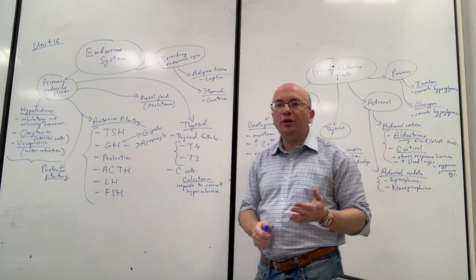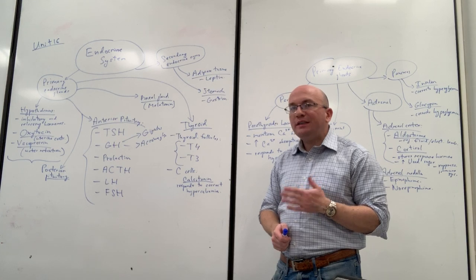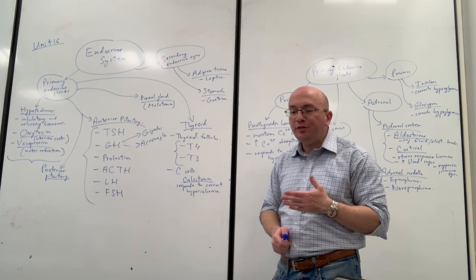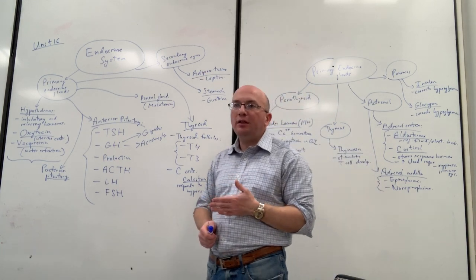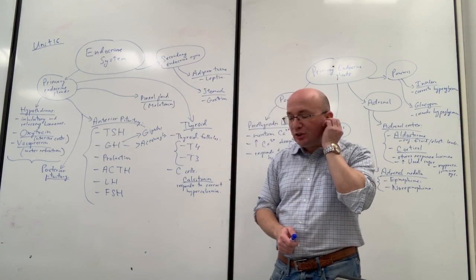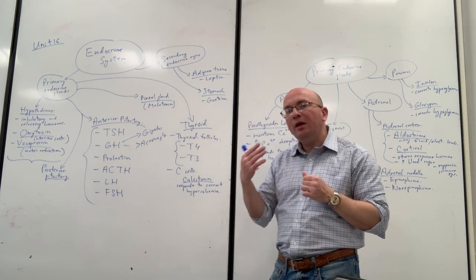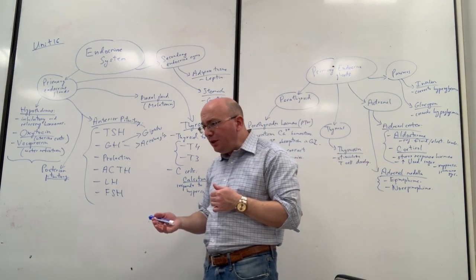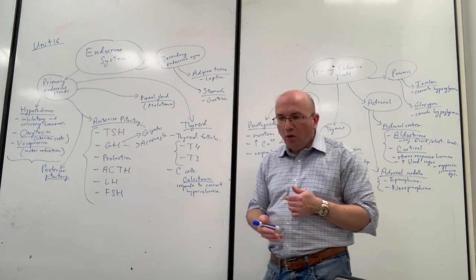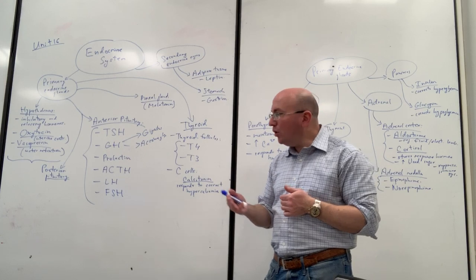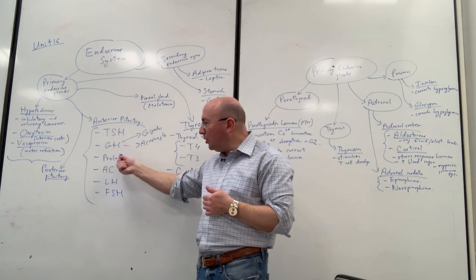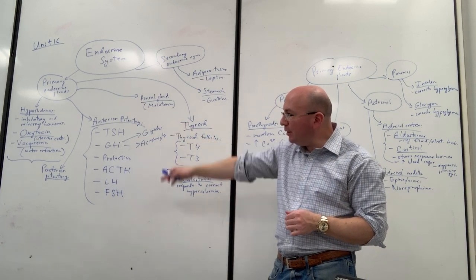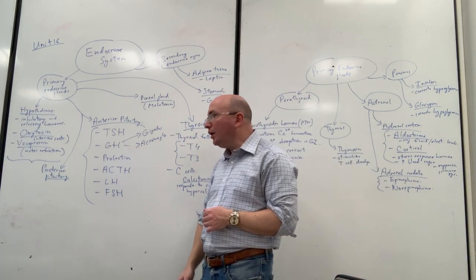For prolactin, we're thinking about stimulation of milk production in the mammary glands in the female, which happens during the later stages of pregnancy just before the woman is ready to give birth. The newborn will be reliant on breast milk, and so in order for the milk to be produced, prolactin is the hormone that must be secreted — coming from the anterior pituitary.